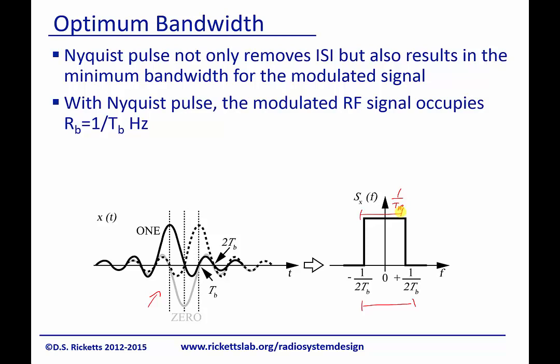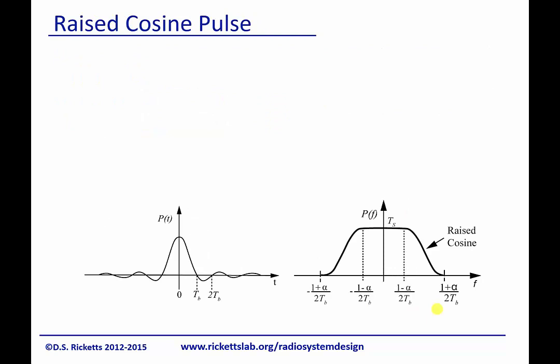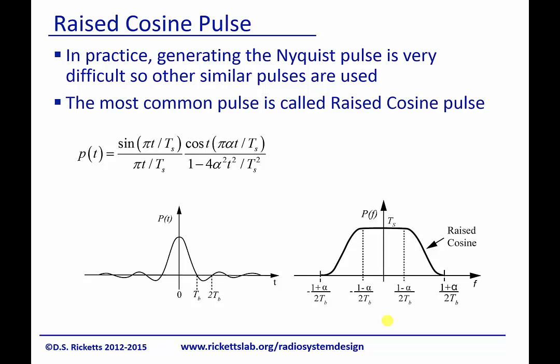It turns out, though, it's actually not very easy to create a Nyquist pulse. And so, people have looked at close approximations, and one of the best ones is a raised cosine filter, or raised cosine pulse. And this is the time domain formula for the pulse shape. And on the right is actually the bandwidth. And the reason this is called a raised cosine is it's actually defined as zero. And then we do a cosine up to here, and then we keep this flat right there.